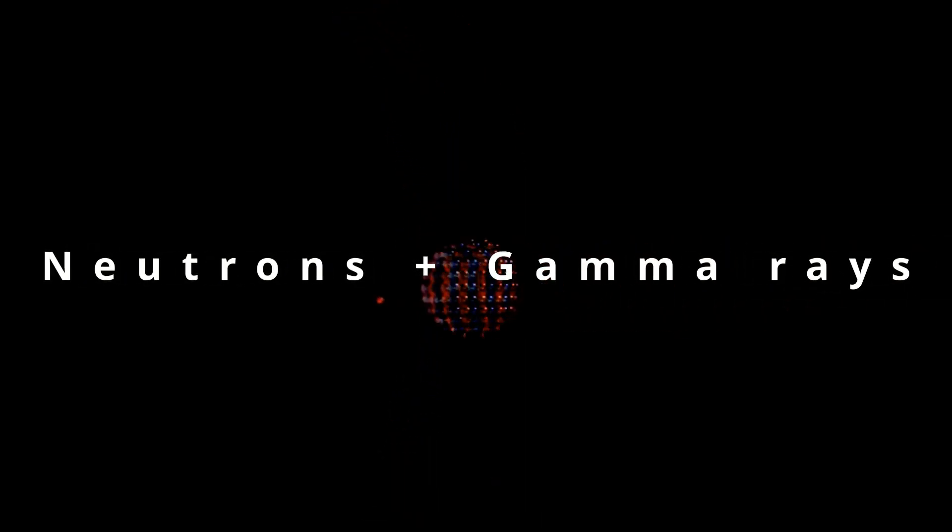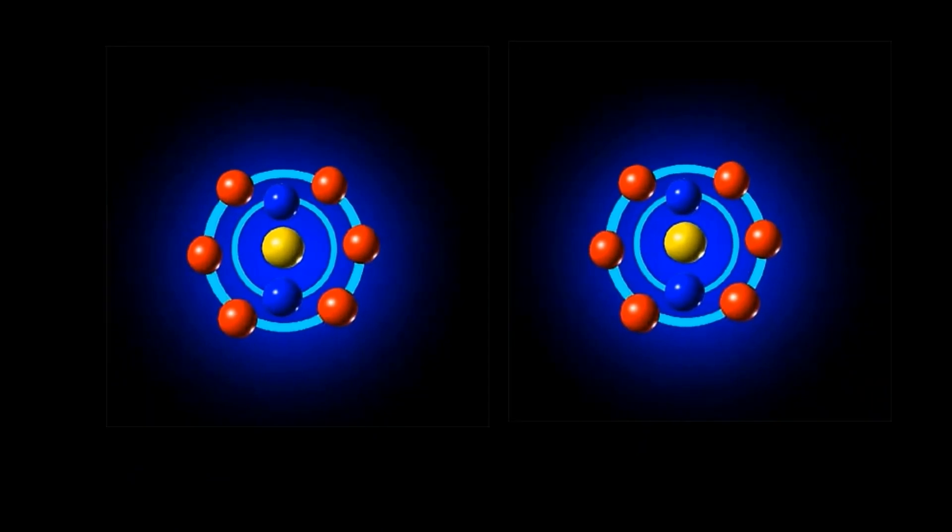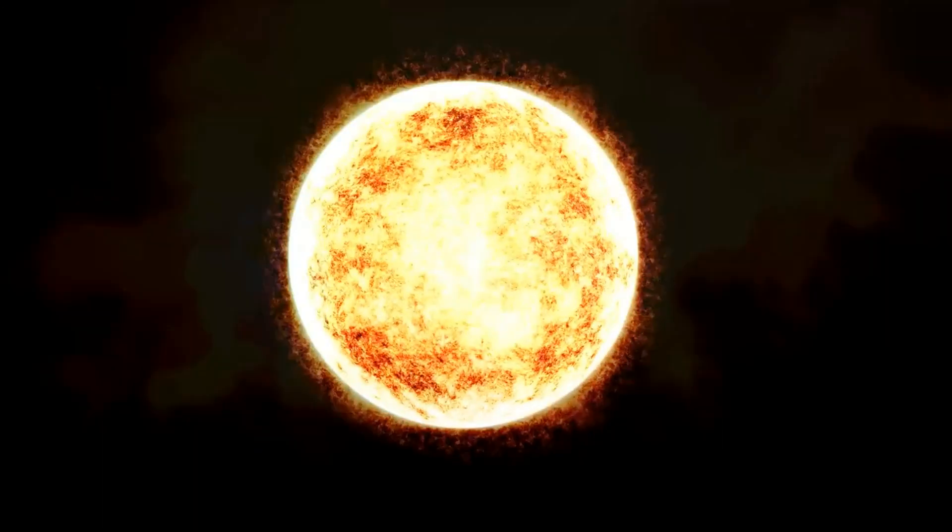Now fission means splitting an atom into two by bombarding it with a neutron. When an atom is split, it ejects neutrons and bursts of electromagnetic energy called gamma rays. Fusion, on the other hand, brings the nucleus of two atoms together forming a single larger atom. This is how our sun produces energy: nuclear fusion.